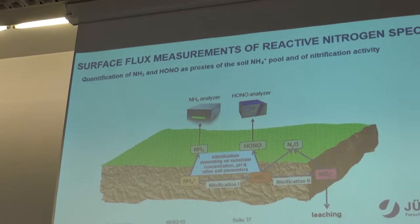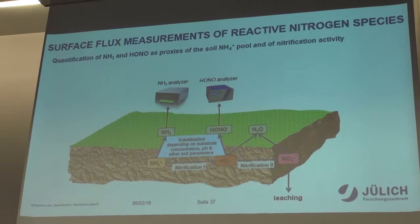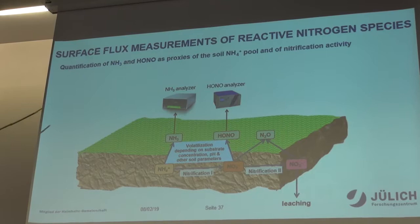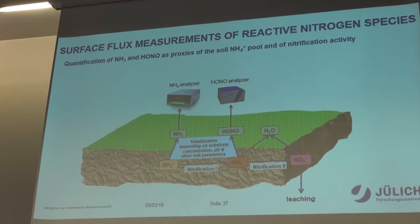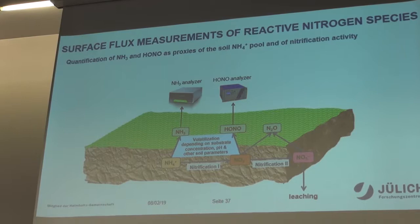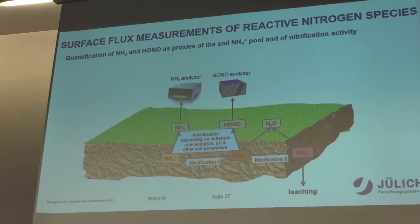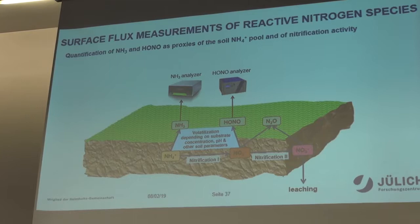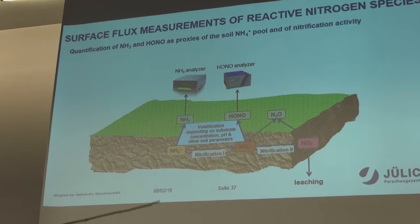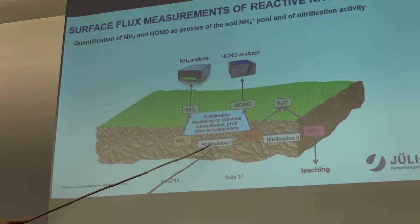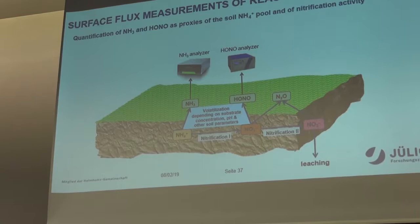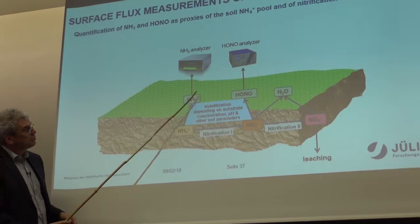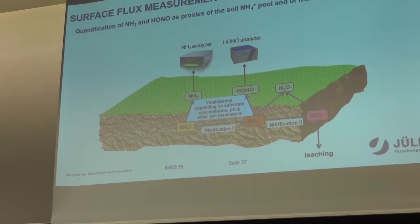A third element is that it's not only about water and agricultural production — it's also about fertilizer. The idea is: can we use gaseous measurements of ammonia and HONO as a proxy to estimate soil ammonium content and nitrification activity? HONO is an intermediate product in the nitrification step. We want to investigate whether these two measurements can give us information about subsurface processes.